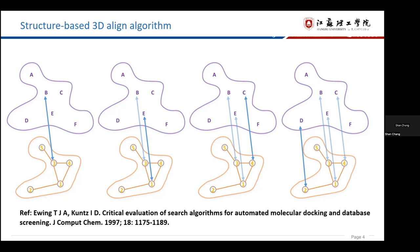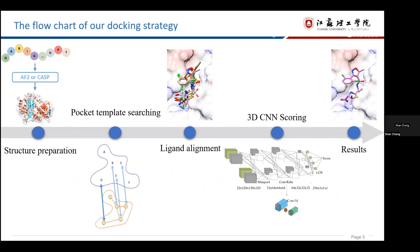Therefore, the flowchart of our docking strategy is shown in this slide. First, modeling the receptor structure from the sequence. The receptor structure is predicted by AlphaFold2 or from the CASP organizers. Then, the template of the receptor pocket is determined by our 3D-align algorithm. Ligand structures are aligned to the small molecules in the template. Then finally, 3D-CNN is used to score the docking poses and the top five conformations are selected.